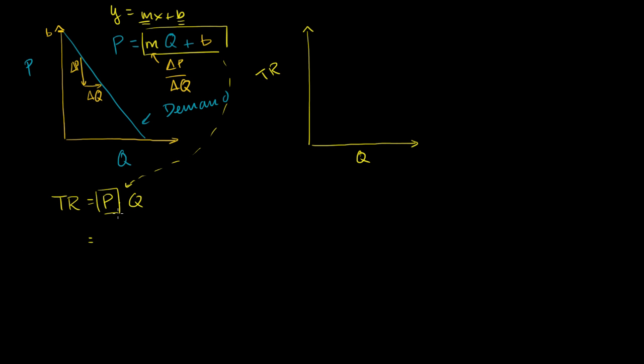So we get total revenue is equal to mq plus b, and then we're going to multiply that times q. We're going to multiply that times q, or we get total revenue is equal to mq squared plus b times q.